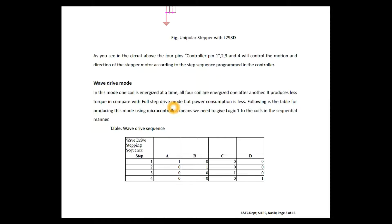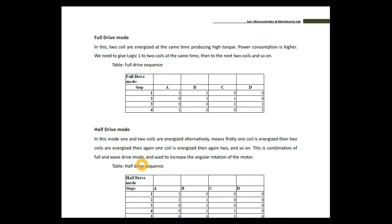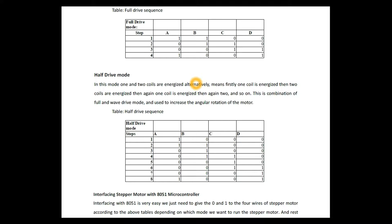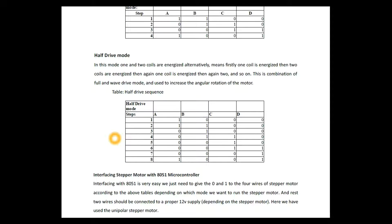A stepper motor can be driven in two ways: half mode and full mode. In half mode, windings A, B, C, and D are energized alternately. In full drive mode, two coils are energized at a time: first A and B, then B and C, then C and D, then A and D. The hex values generated from this sequence are fed to the microcontroller. Half drive is a mixture of half drive and full drive, allowing a finer step angle for the stepper motor.